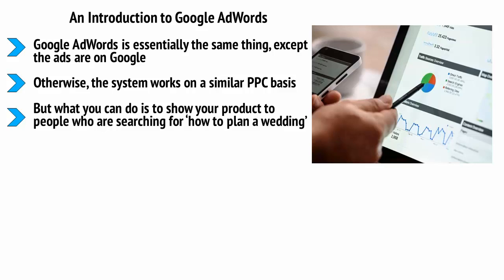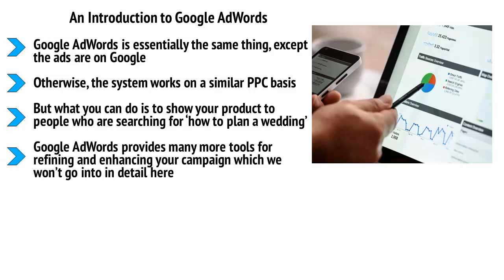This has the benefit of being targeted while also being well-timed. Your audience is not only likely to want to learn about wedding planning, but they're actively looking for information. Google AdWords provides many more tools for refining and enhancing your campaign. One example is the option to use negative keywords — terms that you want to exclude so people don't see your ads. For example, you can make sure that no one searching for the term 'free' sees your ad, as those people are unlikely to be willing to pay for your products.